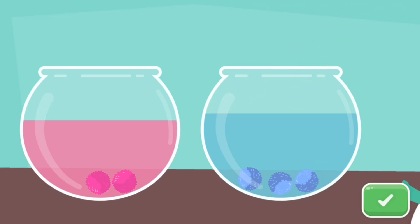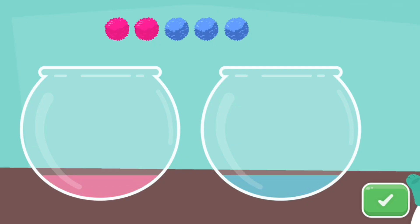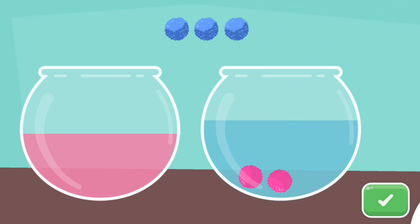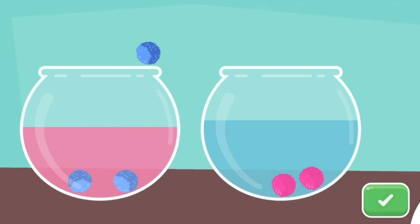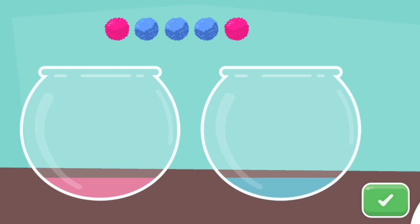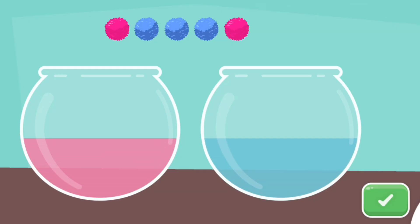Now let's do a tricky one. Put the pink pom-poms in the blue water. Put the blue pom-poms in the pink water. Put the pink pom-poms in the blue water. Put the blue pom-poms in the pink water.